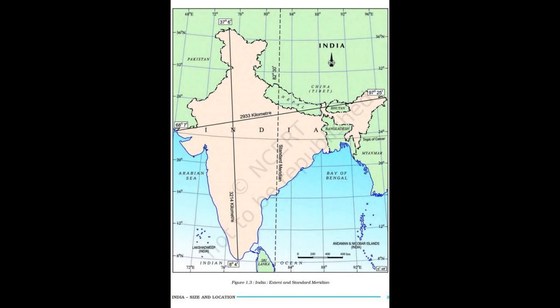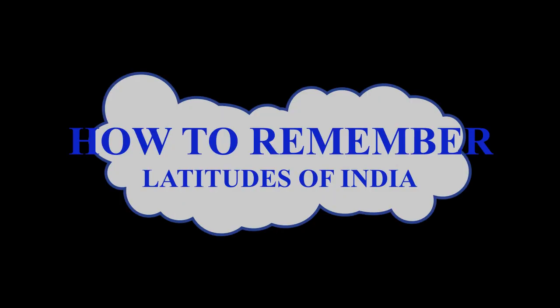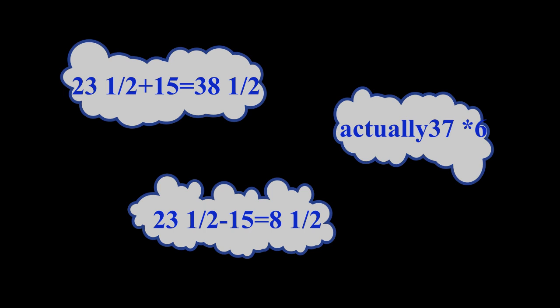Here is a memory technique. The Tropic of Cancer, which is 23.5 degrees, passes through the middle of India. The total latitudinal span is roughly 30 degrees. Since Tropic of Cancer is at the mid-point, add 15 to 23.5 to get approximately 38.5, close to 37 degrees 6 minutes. Subtract 15 from 23.5 to get 8.5, close to 8 degrees 4 minutes.